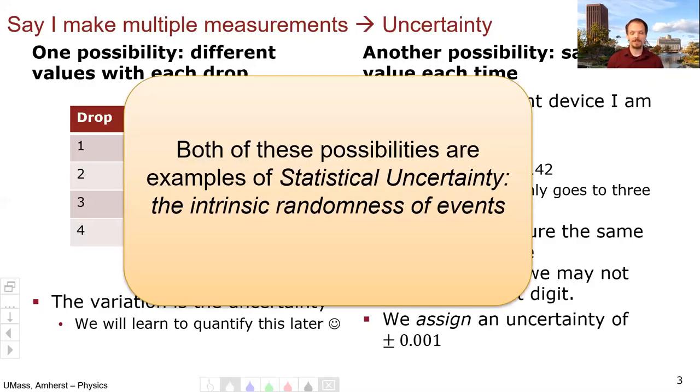Both of these possibilities are examples of statistical uncertainty. They're the intrinsic randomness of continuous variables, not only the intrinsic randomness but also the unknowability.